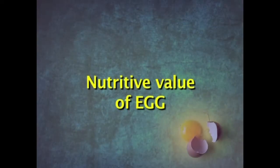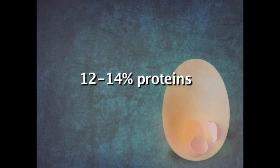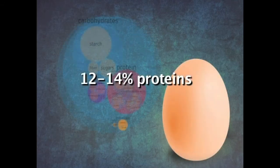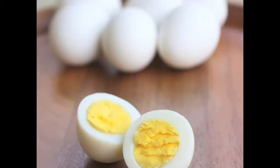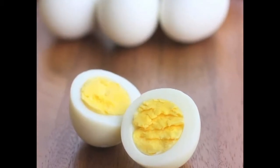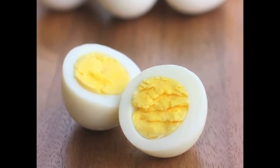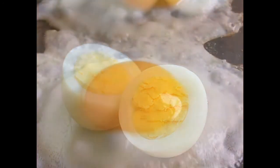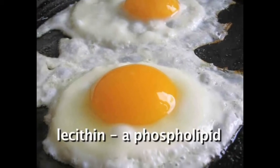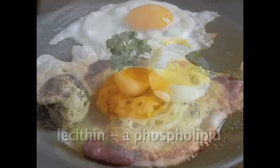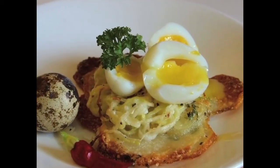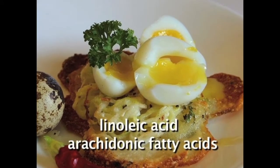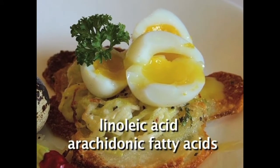Let us now look at the nutritive value of egg. Egg contains 12-14% proteins which are very well balanced in terms of essential amino acid profile. Egg is also a very good source of fat, and the fat of the egg is present in the yolk. The fat contains lecithin which is a phospholipid. Egg is also a good source of essential fatty acids, that is linoleic acid and arachidonic fatty acids.